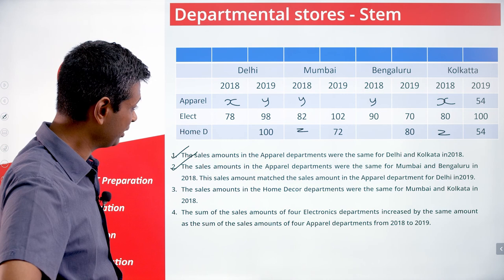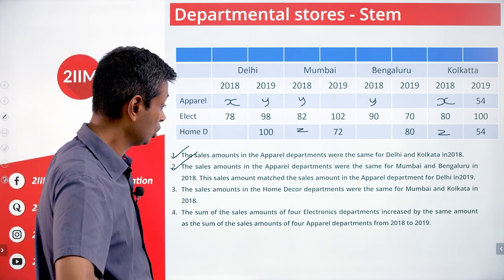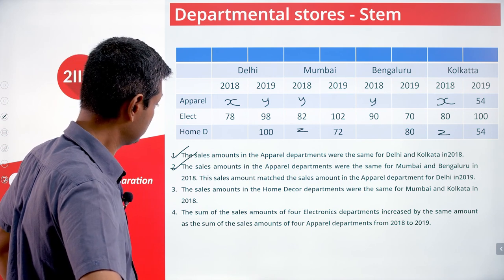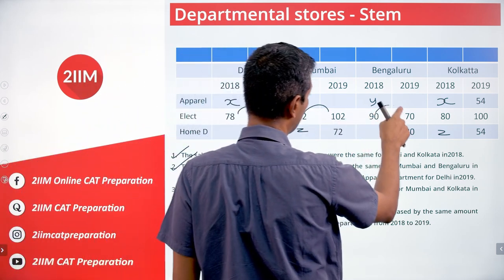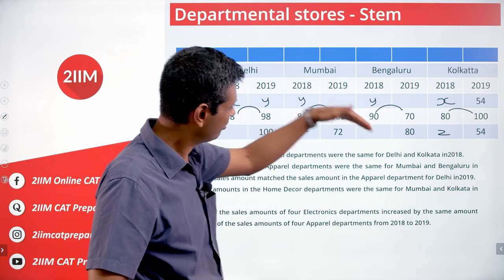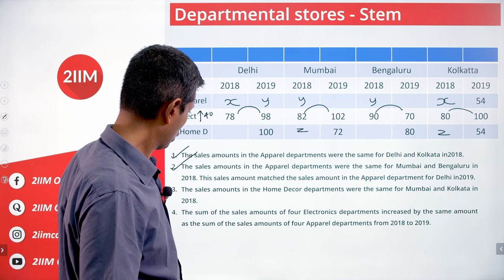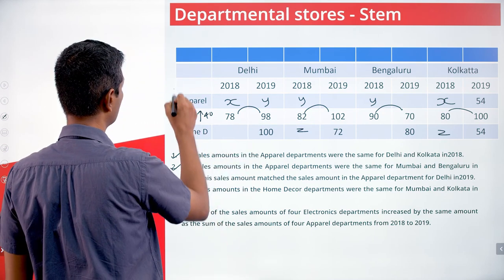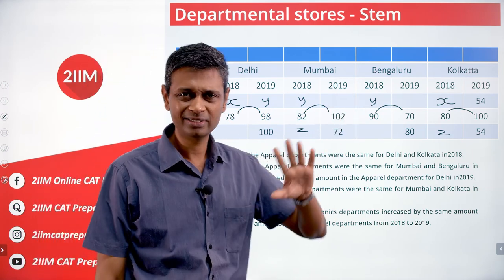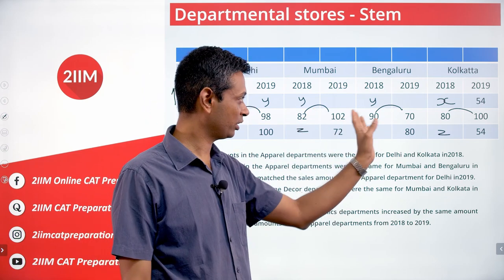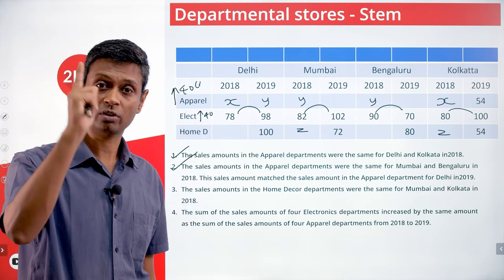The sum of the sales amounts of the four electronics departments increased by the same amount as the sum of the four apparel departments from 2018 to 2019. For electronics we have all the data: plus 20, plus 20, minus 20, plus 20 — two increases cancel one decrease, net increase is 40 crores. So the apparel department from 2018 to 2019 should have also been up by 40 crores. I'll keep that in mind.